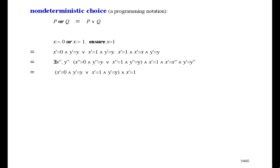And this is what we get, and we can simplify this to x prime equals 1 and y prime equals y, which is the same as x gets 1. We start off with a choice between x gets 0 and x gets 1, but it turns out later that it wasn't a free choice. We had to choose x gets 1.